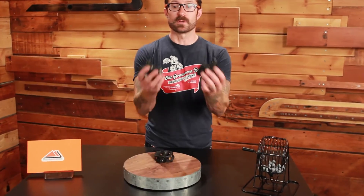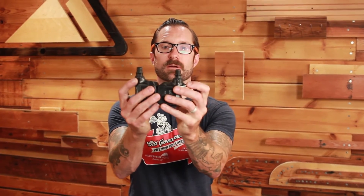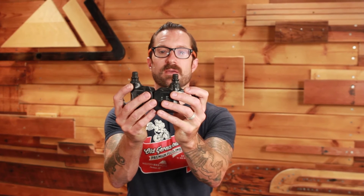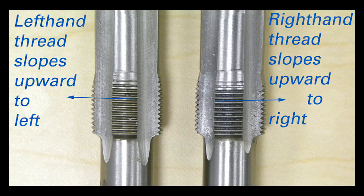How do you tell if it's a left or right hand thread? Really easy. If you hold up a threaded fastener, you can see the threads have a little bit of a ramp to them. If those threads slope up to the left, it's a left hand thread. If they slope off to the right, it's a right hand thread. So you have a little clue just by looking at the pedal spindle.